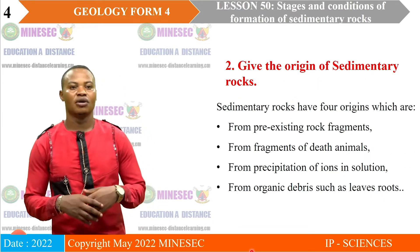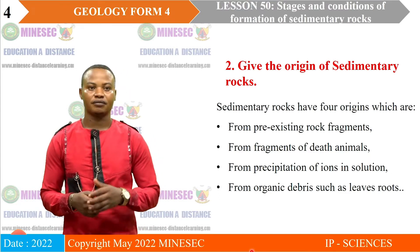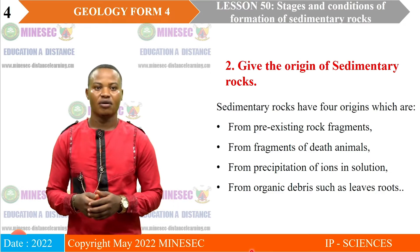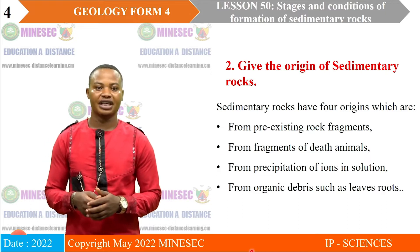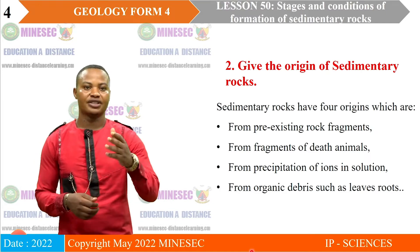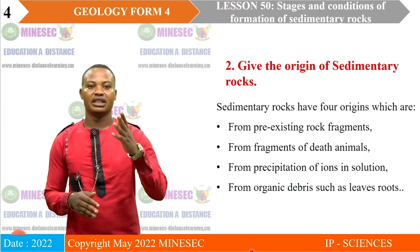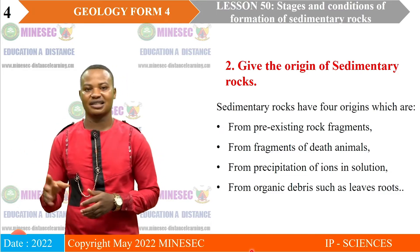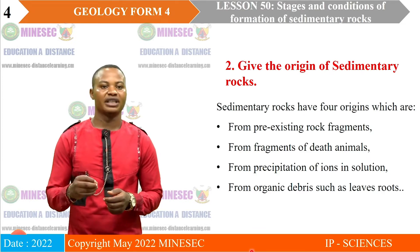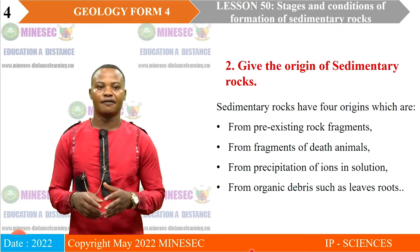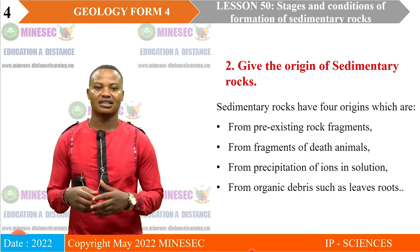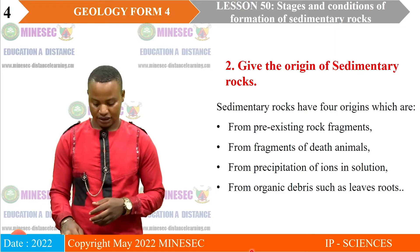Sedimentary rocks have four origins: from pre-existing rock fragments; from fragments of dead animals; from precipitation of ions in solution; and from organic debris such as leaves and roots. Based on this, we have four groups: detrital or clastic sedimentary rocks; biochemical sedimentary rocks (from shells, teeth, and bones); chemical sedimentary rocks (from precipitation of ions); and organic sedimentary rocks (from decaying leaves, roots, and stems).